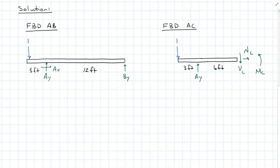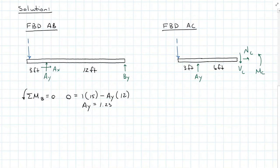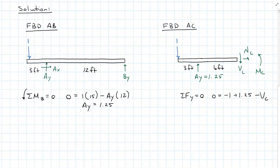Starting with my unit load on the far left, I can sum moments about B and solve for A_Y. We have our unit load of 1 acting at a distance of 15, minus A_Y acting at a distance of 12. My reaction A_Y is then equal to 1.25. So I can now put 1.25 on my free body diagram A-C and sum forces in the Y direction: minus one plus 1.25 minus shear at C. Remember from solids, our positive sign convention where shear acts down on a left section, normal acts in tension, and moment has compression in the top. We need this positive sign convention for our influence line diagrams to be correct.